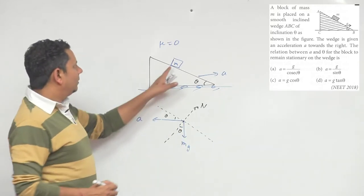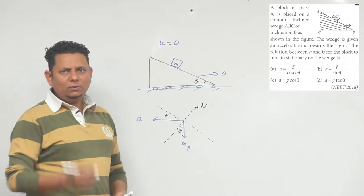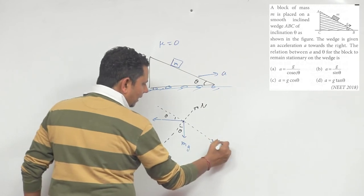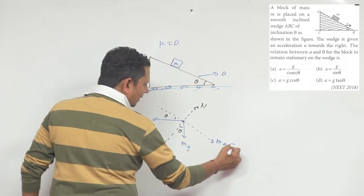We will say that if we have a block stationary with respect to wedge, then on this block there are two forces along the incline. This force component is mg sin theta.